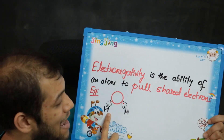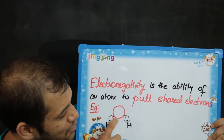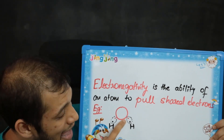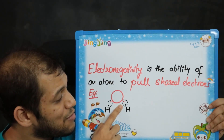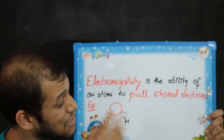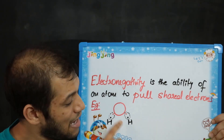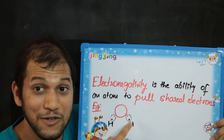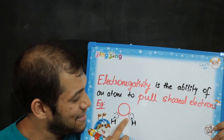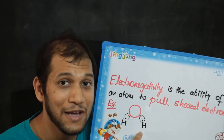In water, or H2O, oxygen and hydrogen share one electron each. The red dot represents the electron from oxygen and the black dot is the electron from hydrogen. These shared electrons will spend some time near oxygen and some time near hydrogen. But since oxygen is more electronegative than hydrogen, oxygen tends to pull these shared electrons more towards itself — so the electrons spend more time around oxygen than hydrogen.